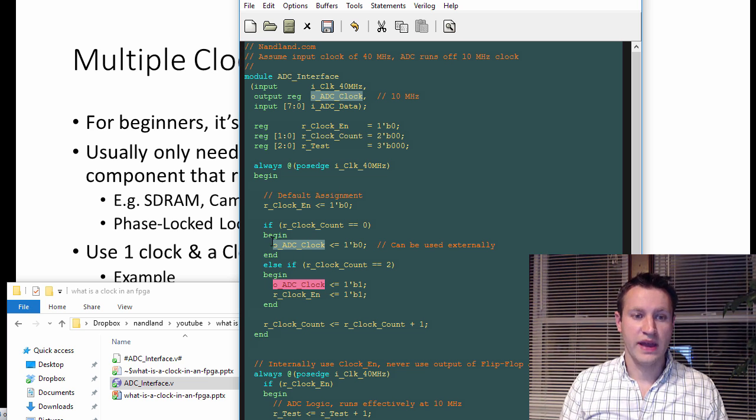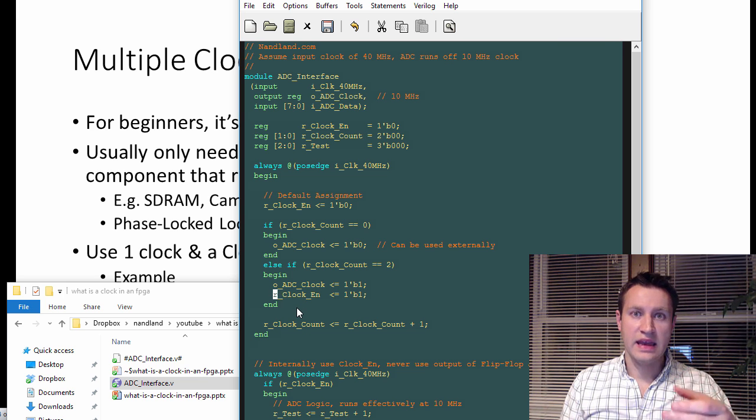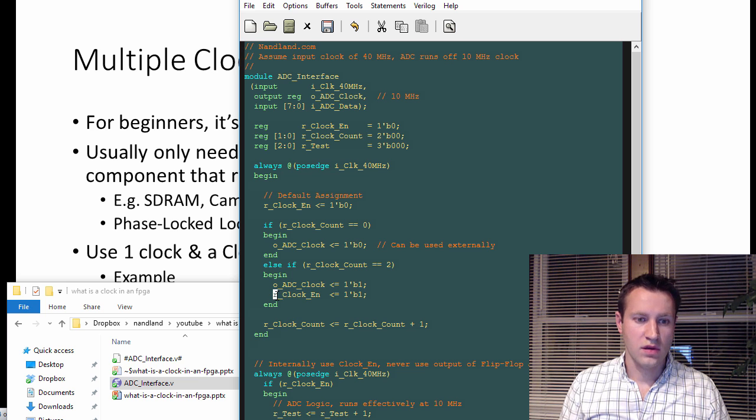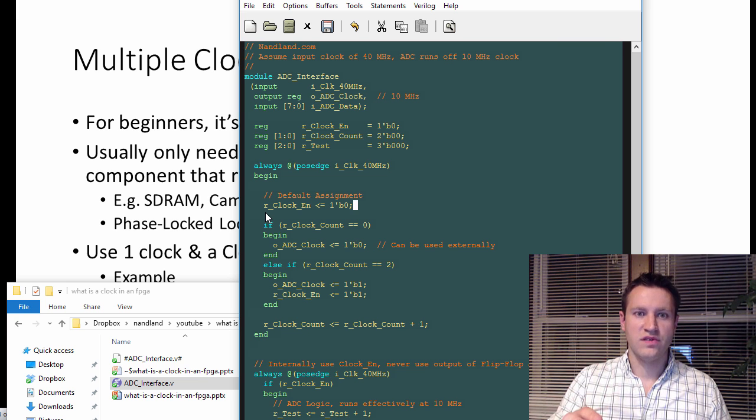So this is showing two things. One, it's showing how to generate a clock that goes external, that's this ADC clock, and two, it's showing you how to divide any clock by some whole number. So in this case, our clock enable is only going to pulse high one clock cycle when our clock count is equal to two. Otherwise, our clock enable is going to be zero, and that is what we're going to use to actually generate signals that change every 10 megahertz.